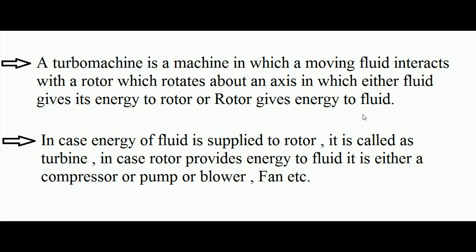For example, a fan is a turbo machine because it has a rotor and the moving fluid is air. Air interacts with the fan, and in the case of a fan, the fan gives energy to the air, increasing the energy content of the air. Similarly, a centrifugal compressor is also a turbo machine — it handles gas, takes it inside, and adds energy to the gas so that high pressure can be developed.